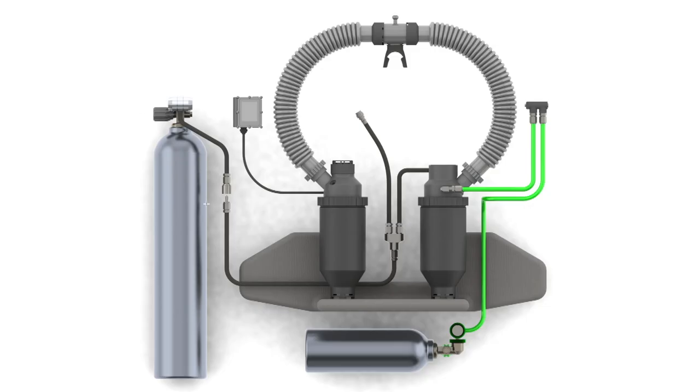So, right over here, we have our off-board diluent slash bailout supply. The KISS Spirit and the KISS Sidewinder both have their diluent fed via off-board bottles. Right here, we have our first-stage regulator, of course, and this feeds to a low-pressure hose with a quick disconnect right here, which then feeds to the unit.